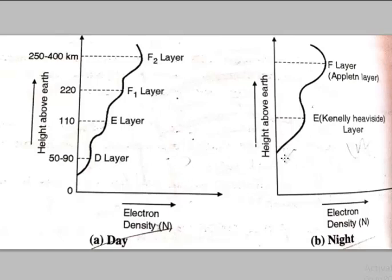However, the D layer vanishes during the night because of the absence of ultraviolet radiations needed for ionization, although the E layer and F layer remain present. The E layer becomes the Kennelly-Heaviside layer during the night.